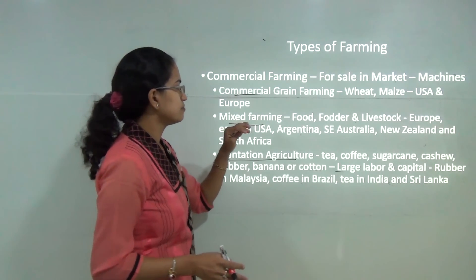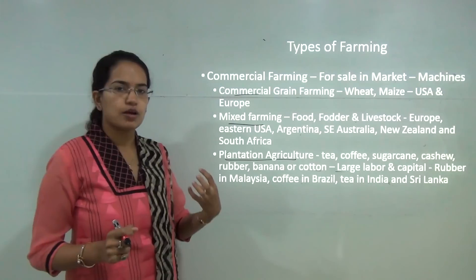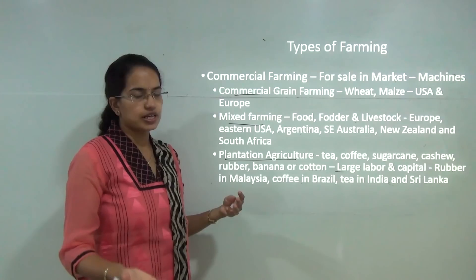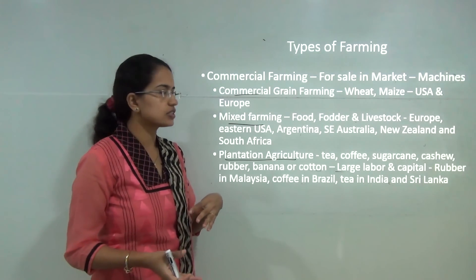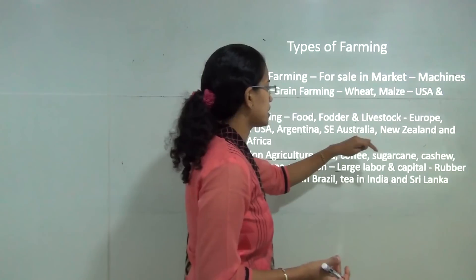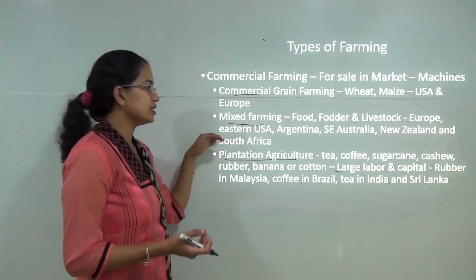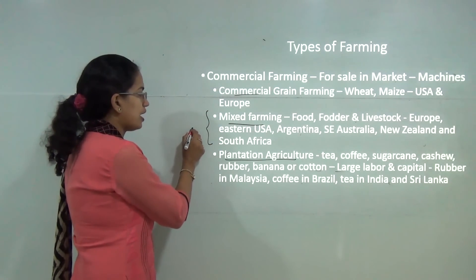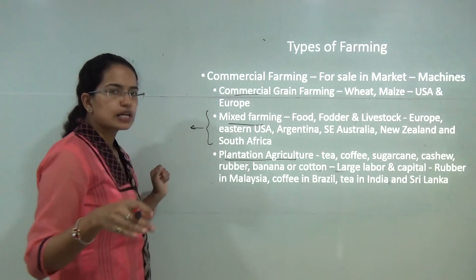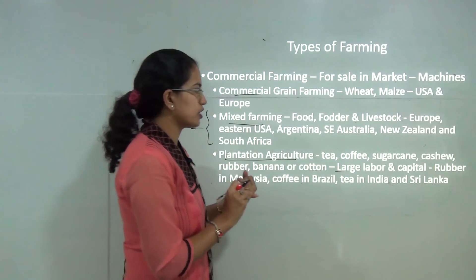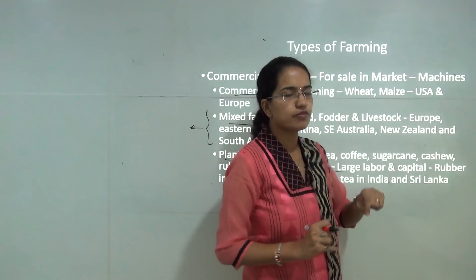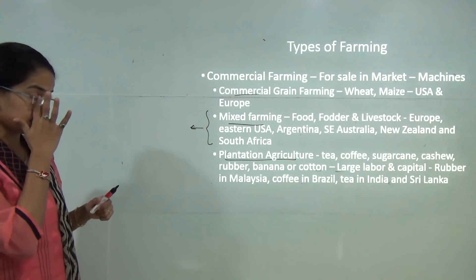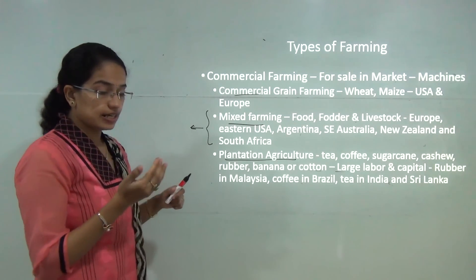Mixed farming is meant for producing food, growing fodder for animals, and rearing livestock — all in the same region. Examples include Europe, Southeast Australia, New Zealand, Argentina, and South Africa, where mixed farming is common.